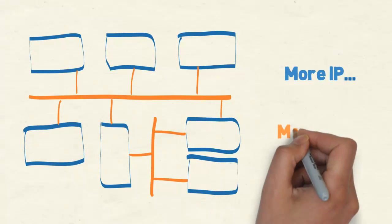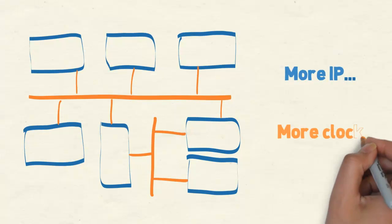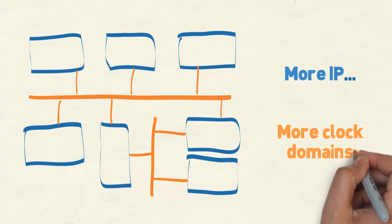When signals cross between these clock domains, you must be very careful to synchronize them, or you may end up with intermittent failures.